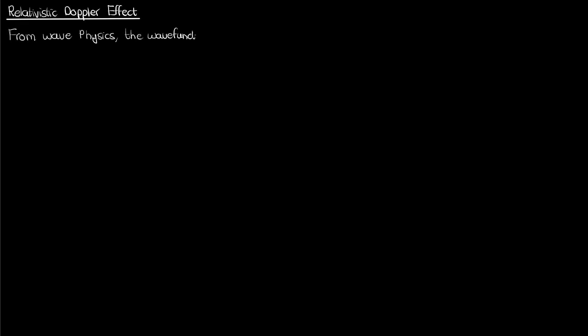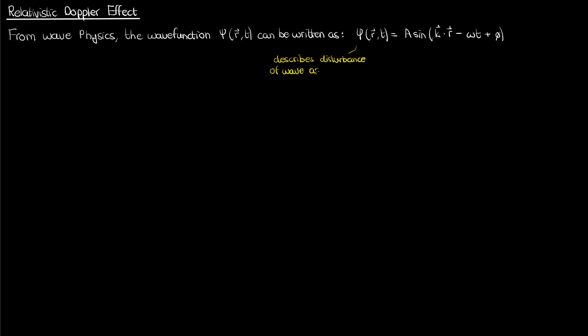If you studied basic wave physics, then you know that a wave function psi — which is basically the disturbance in the wave that results in the peaks and the troughs — can be written for a sinusoidal wave as an amplitude A times the sine of k dot r minus omega t plus an angle phi. The psi represents the wave function, which describes the disturbance of the wave as a function of position in space given by the position vector r and the time t. For instance, for a water wave, the psi would be the vertical displacement of the water above or below the regular water level.